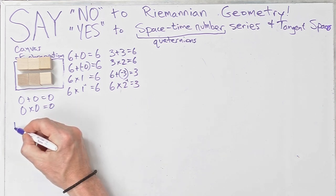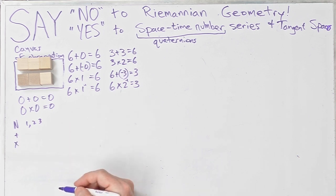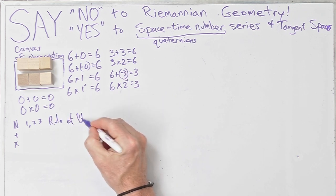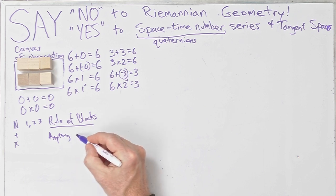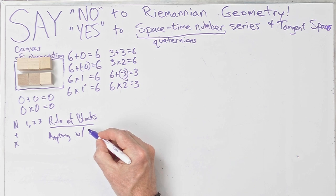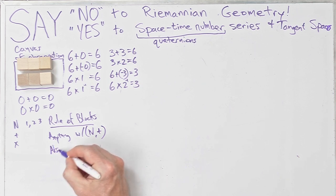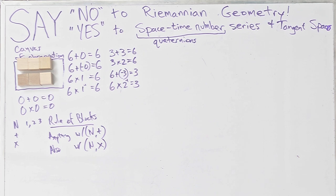Everything I've been doing is with numbers n — 1, 2, 3 — and operators plus and times. I'm going to introduce what I call the rule of blocks: anything you can do with n and plus, you can also do with n and times. There are branches of math that only use addition, but I think nature doesn't have that kind of flexibility.